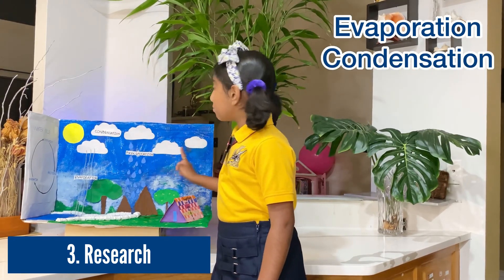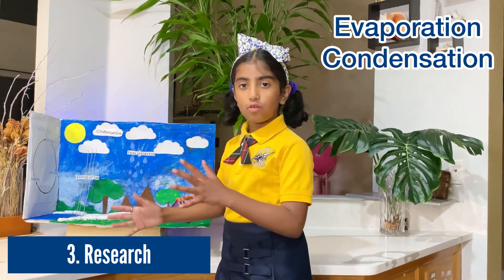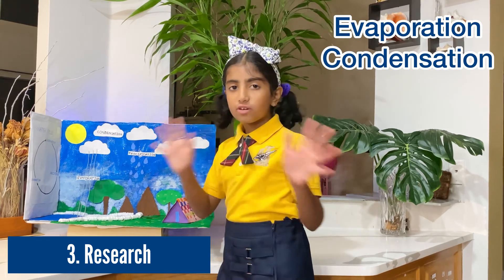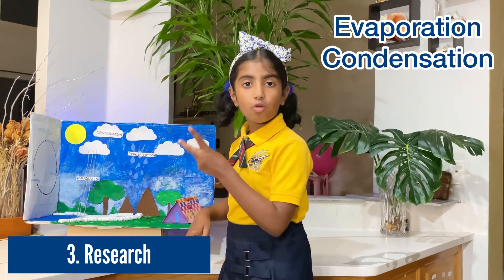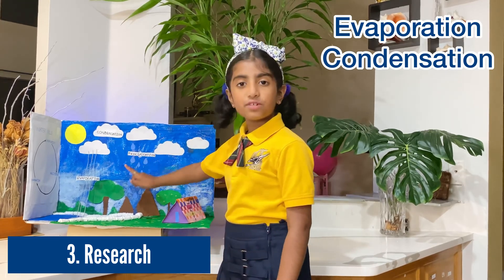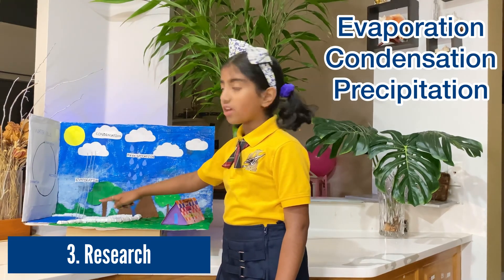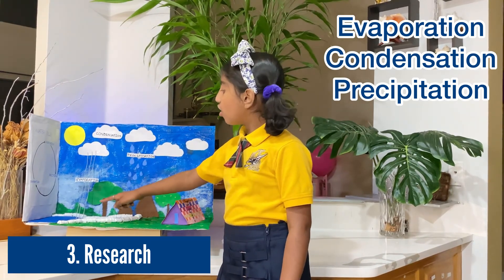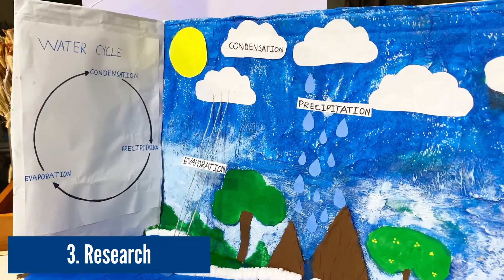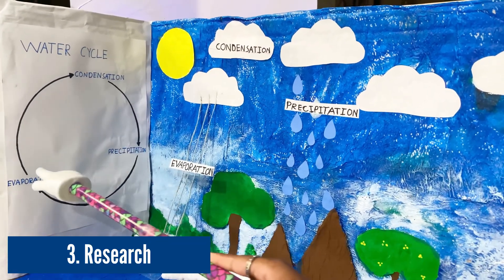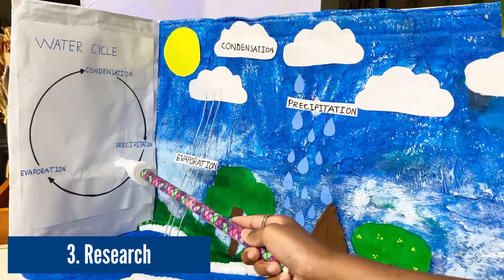These clouds can move around. They can collect more water as they move. So when they have no more space to get water, they burst out water or hail or snow. This is called precipitation. Precipitated water goes and is collected in rivers, oceans and lakes. Thus, the water cycle is the continuous process of evaporation, condensation and precipitation.